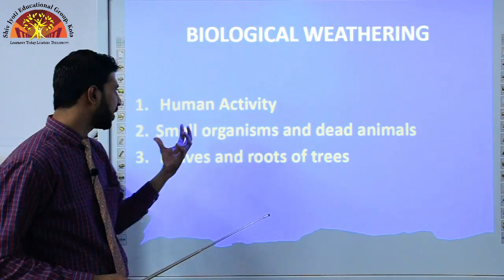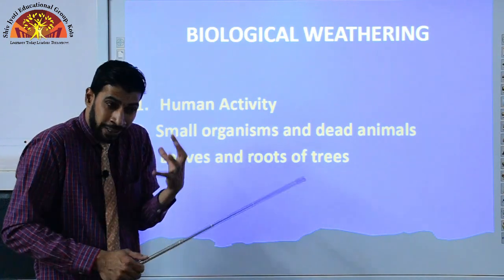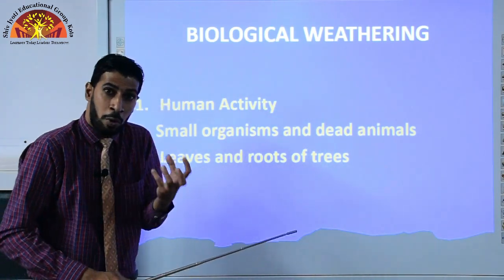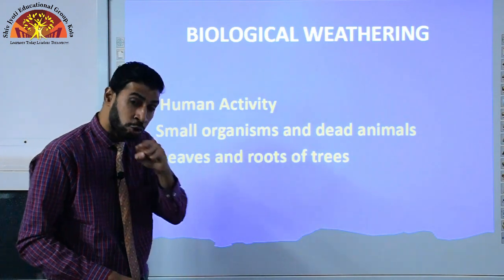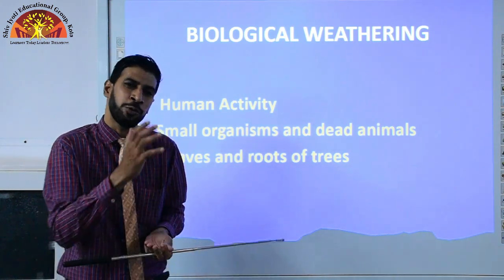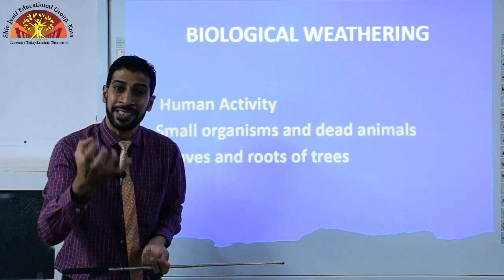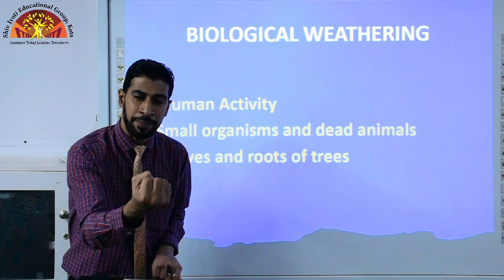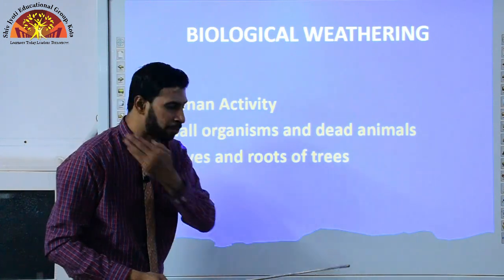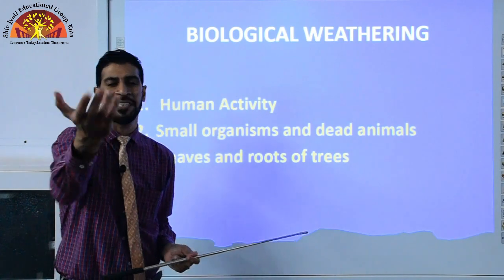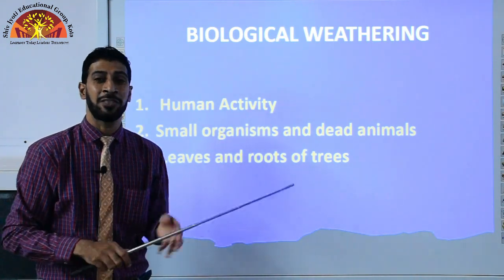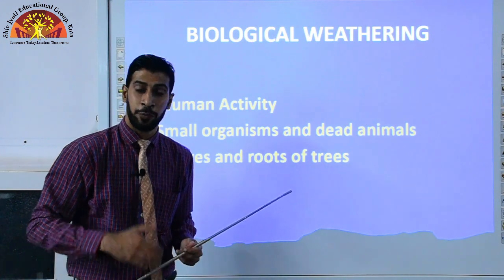Biological weathering occurs due to human activity, small organisms, and dead animals. A soil with high humus content gets that way because of dead animals and dead plants — their biochemical and organic matter increases the humus in soil. Leaves and roots of trees fall and slowly, through weathering processes, are buried into the soil and gradually turn into very useful soil matter.